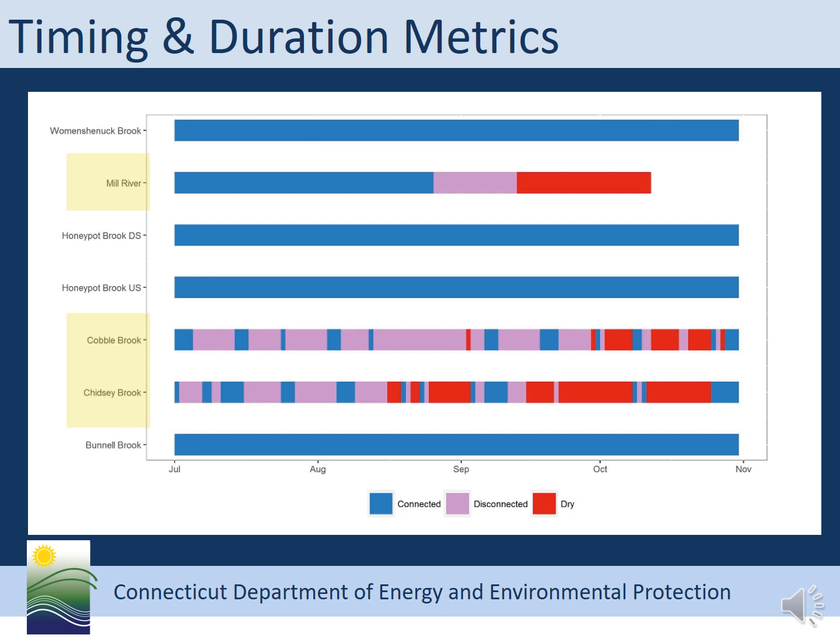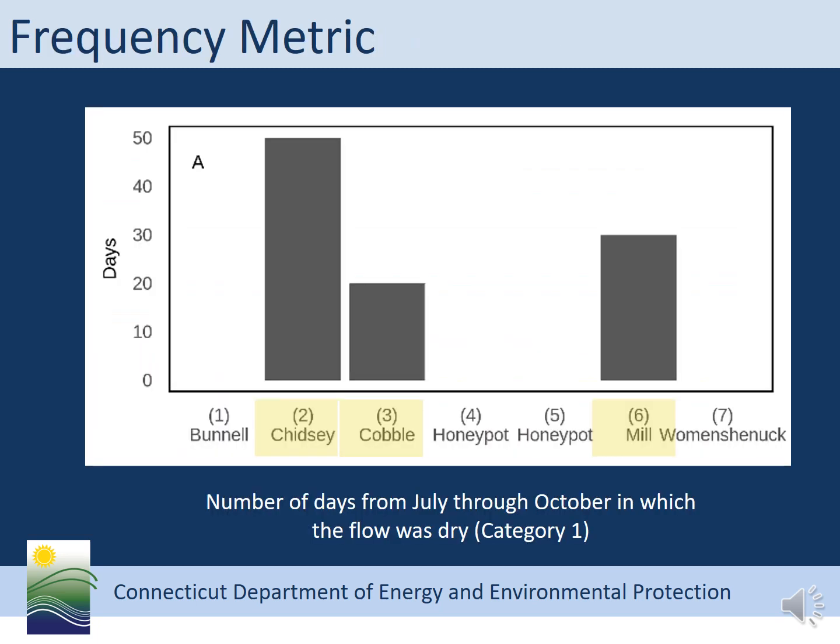Here's an example of the timing and duration metrics. We have seven streams that we monitored with trail cameras. The bars represent the stream flow from July through October. The blue sections show when the stream was connected, the pink sections show when the stream was disconnected, and the red sections show when the stream was completely dry. Four of the streams stayed connected throughout the study period. Two of these streams jumped back and forth between connected, disconnected, and dry. And one stream clearly had a gradual decrease in stream flow until it remained dry throughout the study period. For the frequency metric — the number of days from July through October in which the flow was dry — Schutze Brook had the most days, almost 50, followed by Mill River and Cobble Brook. The other four streams had no days in which the flow was dry.